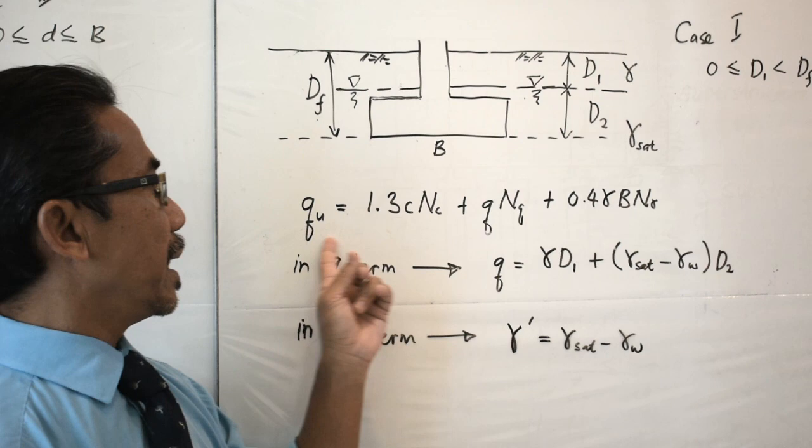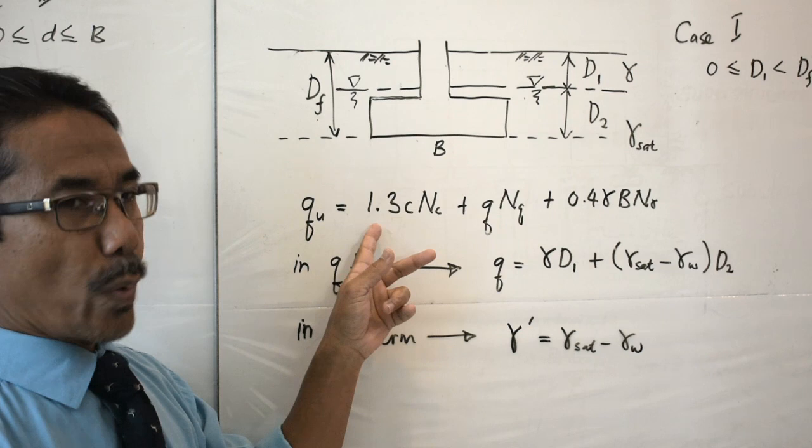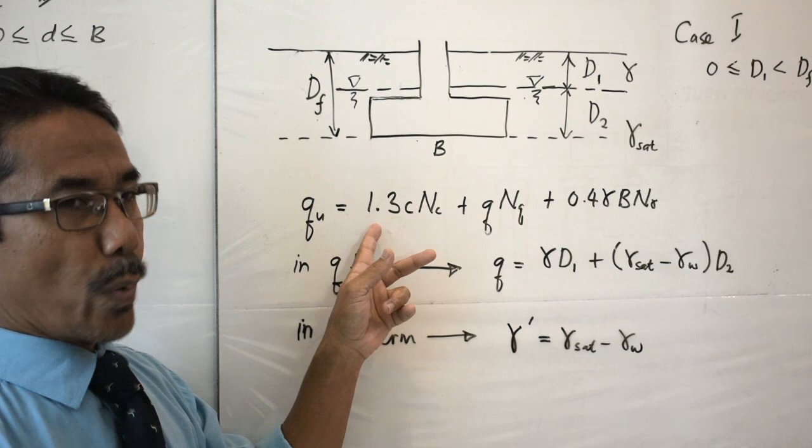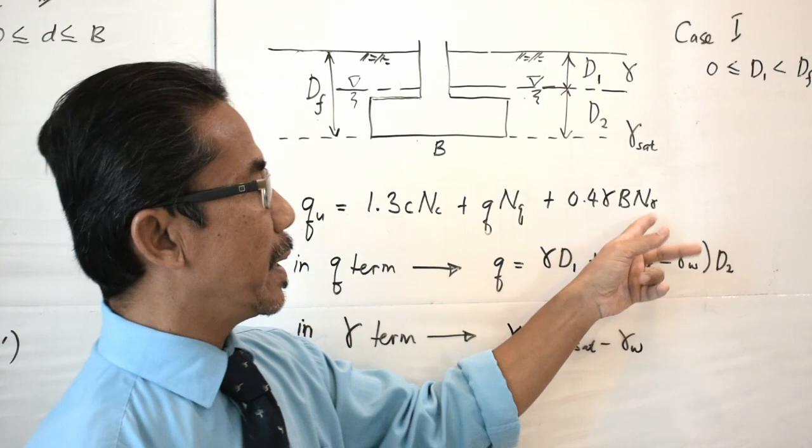In this case, let's say we use Terzaghi's equation for square footing, expressed as 1.3c·Nc + q·Nq + 0.4·gamma·B·Ngamma. This has a c term, q term, and gamma term.